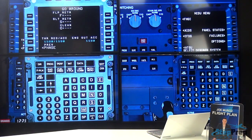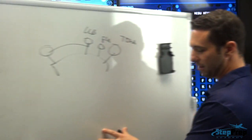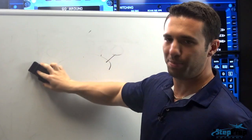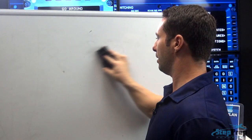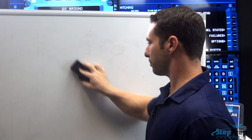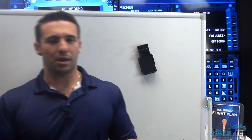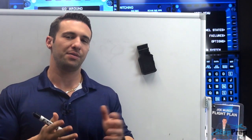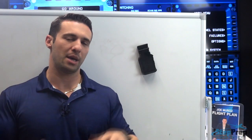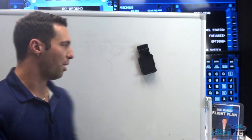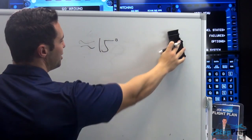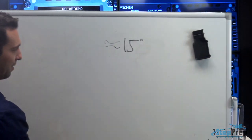SRS mode stands for Speed Reference System. In terms of what it's pitching for, it targets V2 to about V2 plus 10, or VApp to VApp plus 10, but what that really translates into is approximately 15 degrees nose up. That, in a nutshell, is roughly what SRS is going to give us.